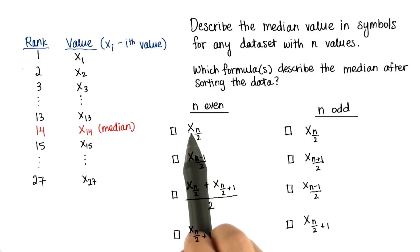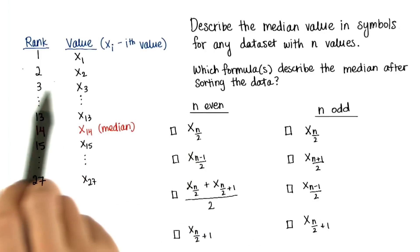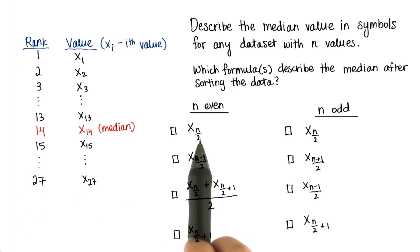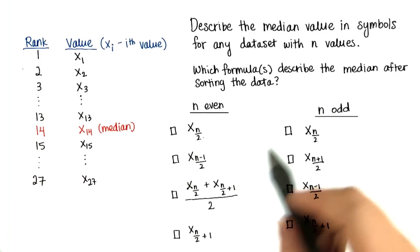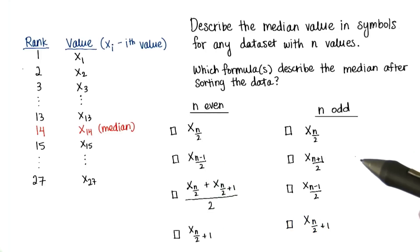So this would mean x sub 2, which is the second value, might be the median if n is 4. I'm not saying that's right, I'm just giving you an example. So give this your best shot. And again, this should really help get you used to using symbols.